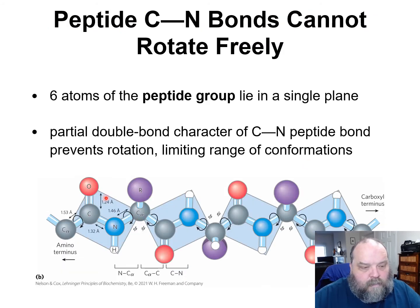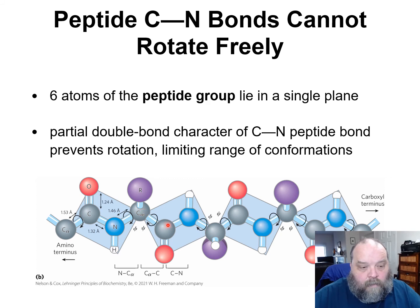But even while this resonance is going on, what we see is this plane between neighboring alpha carbons — carbon, alpha carbon, carbon, nitrogen, alpha carbon — forming a rigid planar unit between amino acid one and amino acid two. You can label these out: alpha carbon, nitrogen, alpha, and so on — amino acids one, two, three, four, five.